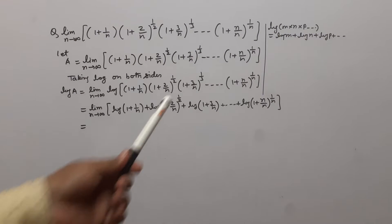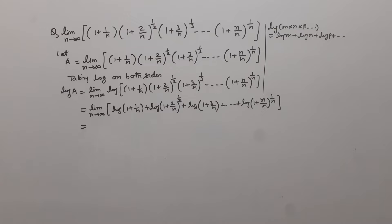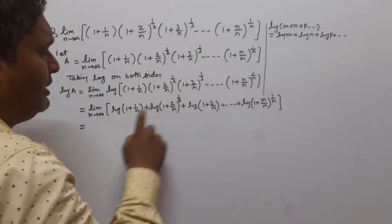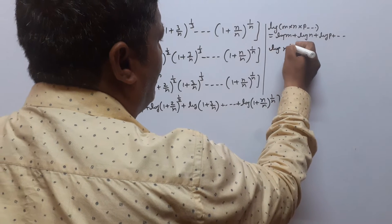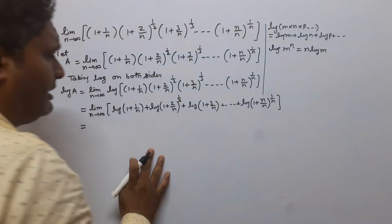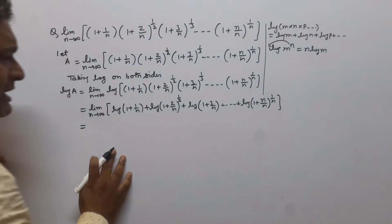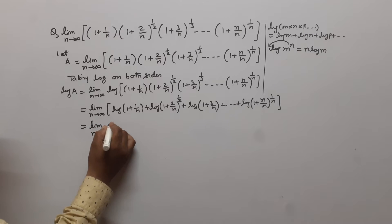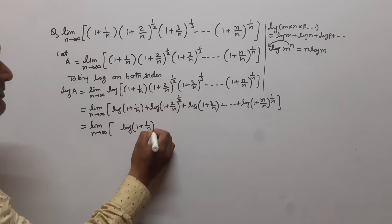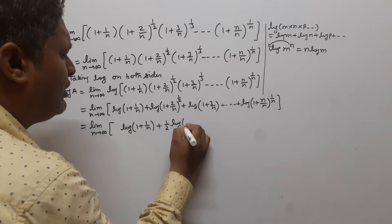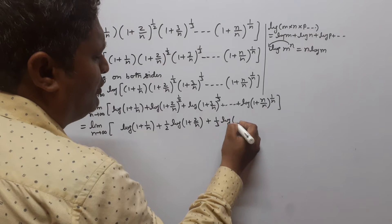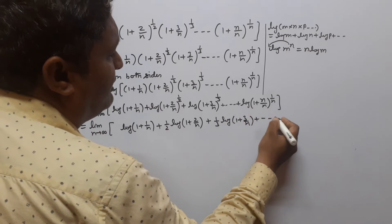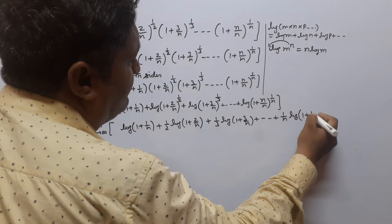Using the log property log(m·n·p···) = log m + log n + log p + ···, and also the formula log(m^n) = n·log m, where the power comes before the log. So we can write: log(1 + 1/n) + (1/2)log(1 + 2/n) + (1/3)log(1 + 3/n) + ··· + (1/n)log(1 + n/n).